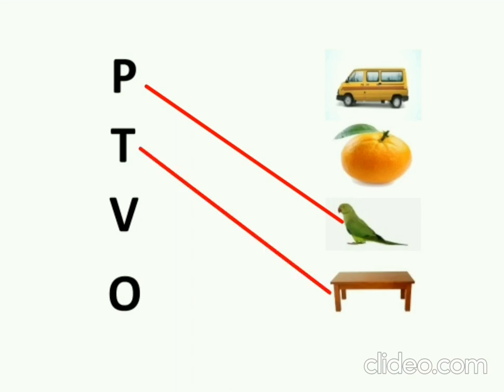Next letter is V. Sound of V is V. Van. We will match V with Van. And the next letter is O. Sound of O is O. Orange. O for Orange. We will match O with Orange.